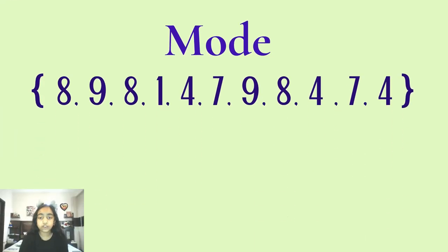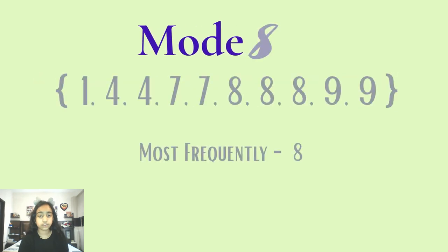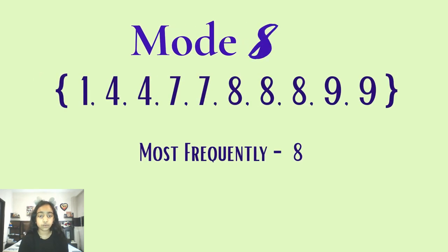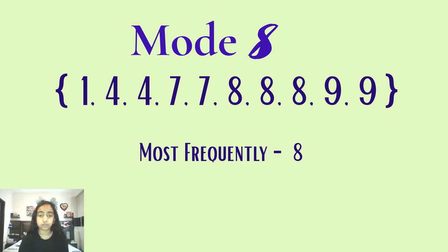Here we have another example. To find the mode of this data set, we first need to arrange it in ascending order. One is not getting repeated at all, four and seven are getting repeated twice, eight is getting repeated thrice, and nine is getting repeated twice. So clearly eight is our mode because that is the number which is appearing most frequently.